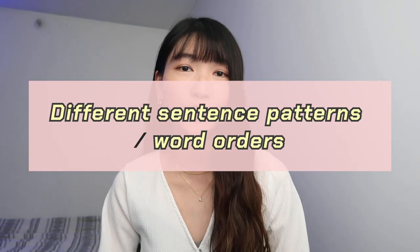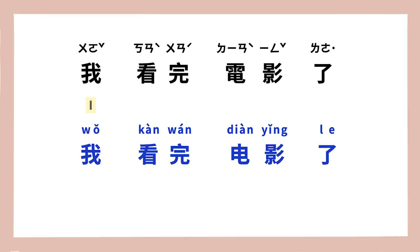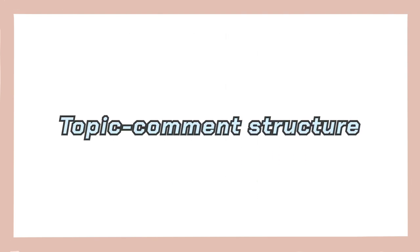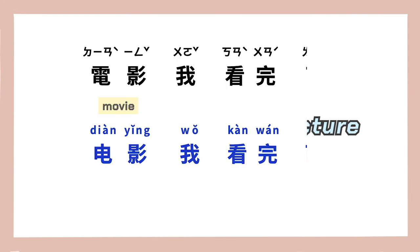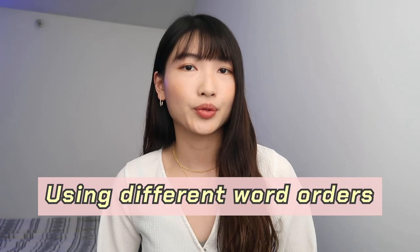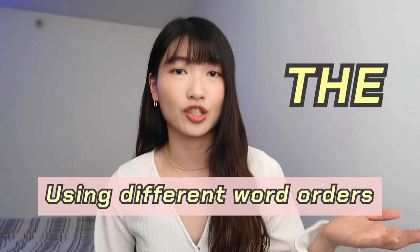If you have learned Chinese for a while, you might have noticed that in Chinese, we have many different sentence patterns and word orders. For example, you can say 我看完电影了, which uses the SVO structure — subject, verb, object. But we also have a topic-comment structure where you can say 电影我看完了, which uses the OSV structure — object, subject, verb. Using different word orders is another way to help express 'the' in Chinese.